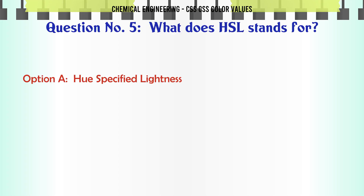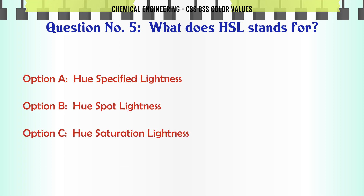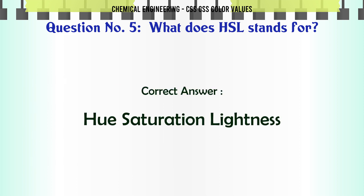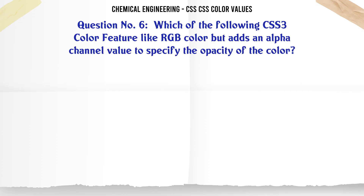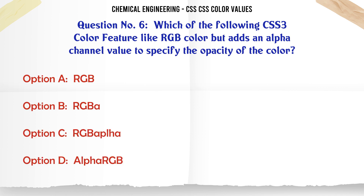What does HSL stand for? A: hue specified lightness. B: hue spot lightness. C: hue saturation lightness. D: none of the mentioned. The correct answer is: hue saturation lightness.